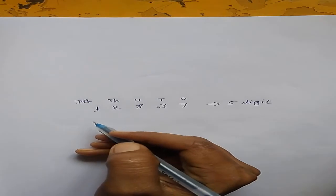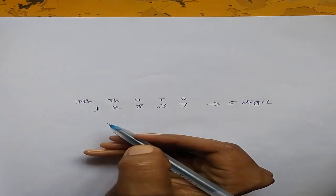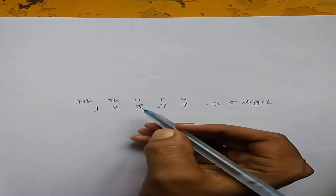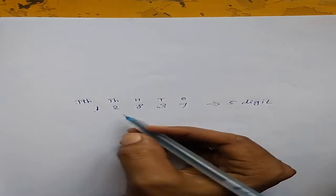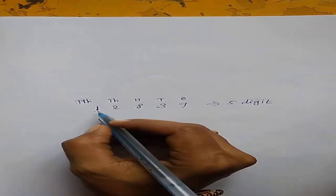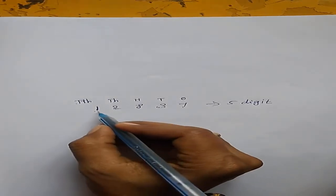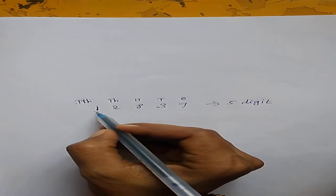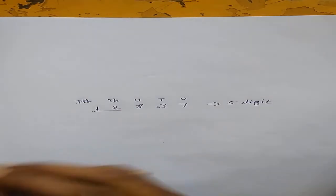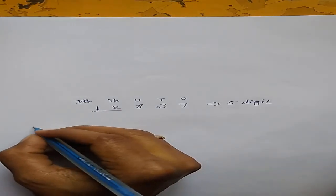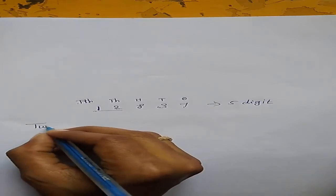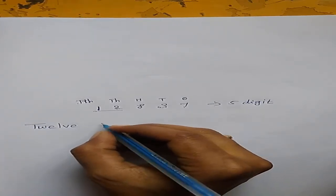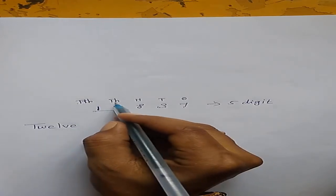Did you understand, children? Then write the numbers in words. Start from the left side. First write the thousands family. What are the numbers in the thousands family? 12. So write the spelling: T-W-E-L-V-E. 12,000 — this is the thousands family.